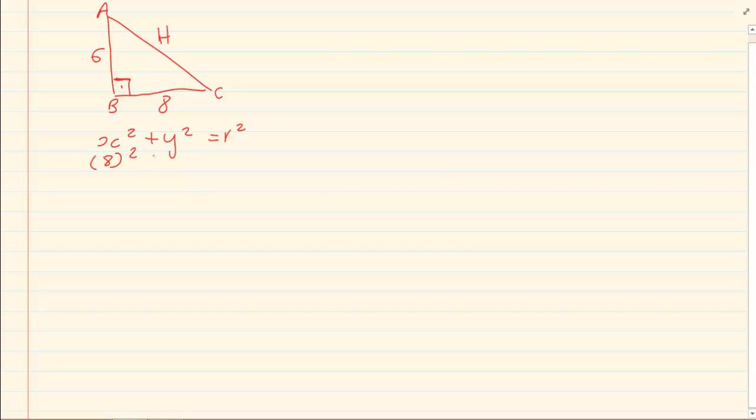x squared plus y squared is equal to r squared. Now when you are using the Theorem of Pythagoras, it doesn't matter if you make BC x and AB y, or if you use it the other way around.